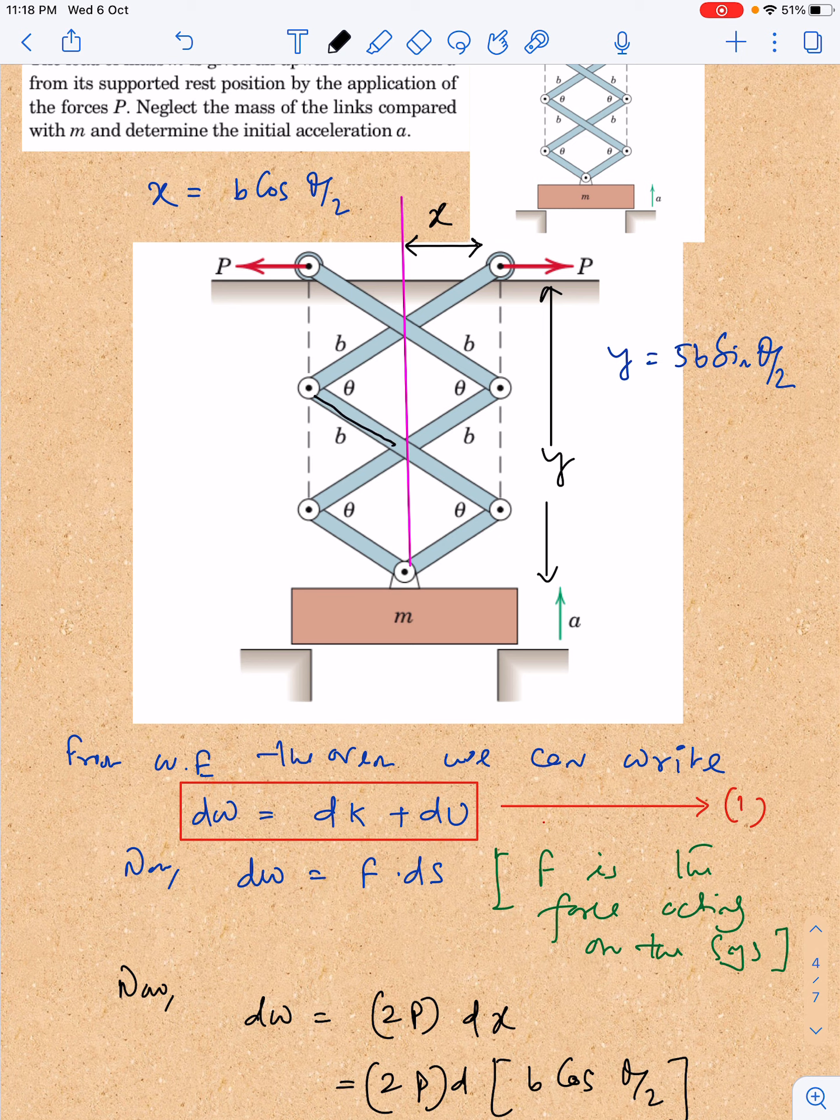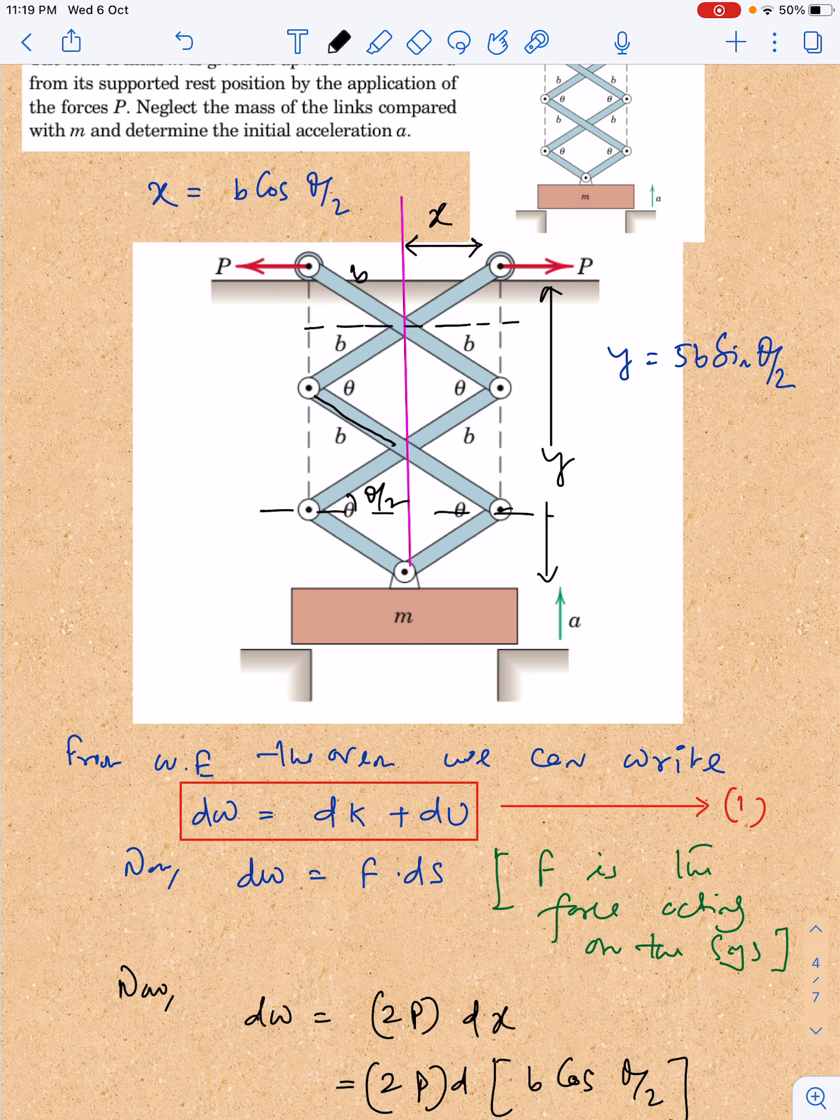I have taken the diagram. You can see very easily that if this is b and this angle is theta, then this will become theta by 2. If this is b and this is theta by 2, then this distance x is b cos theta by 2. Similarly, if we calculate y, this is b sin theta by 2, this is also b sin theta by 2, and in between these two values, total it is coming 5b sin theta by 2.